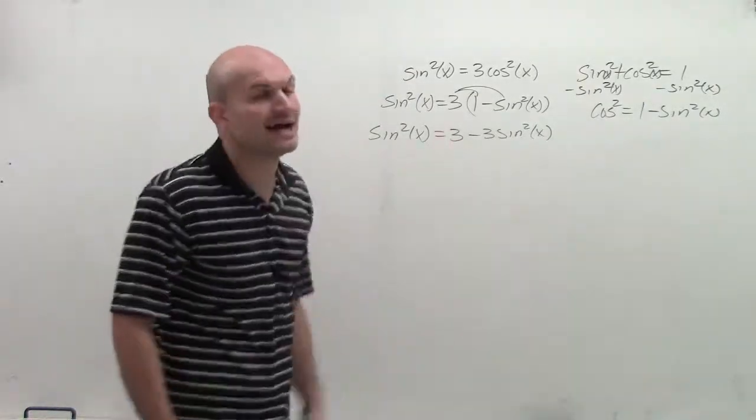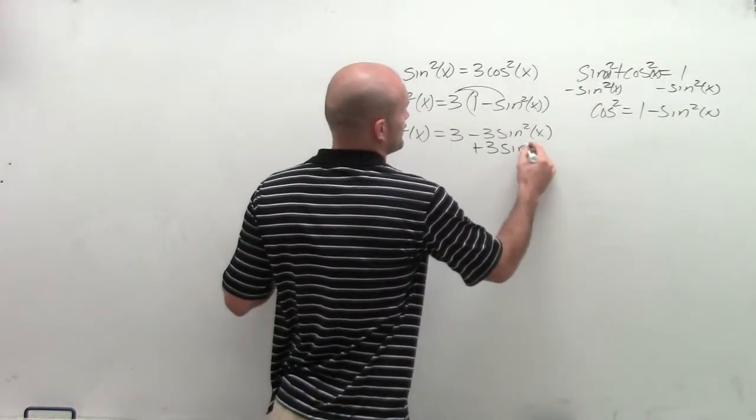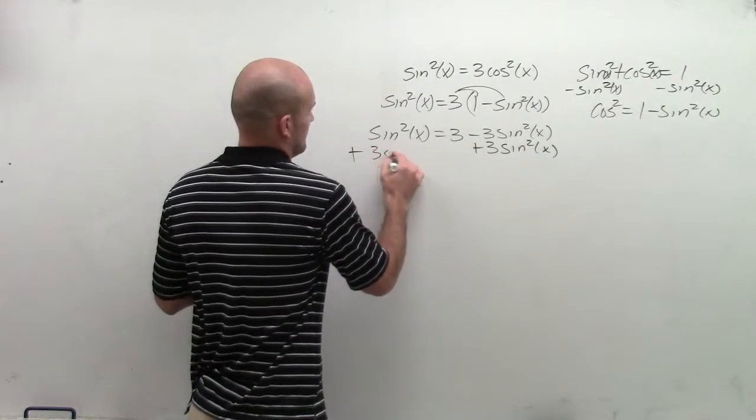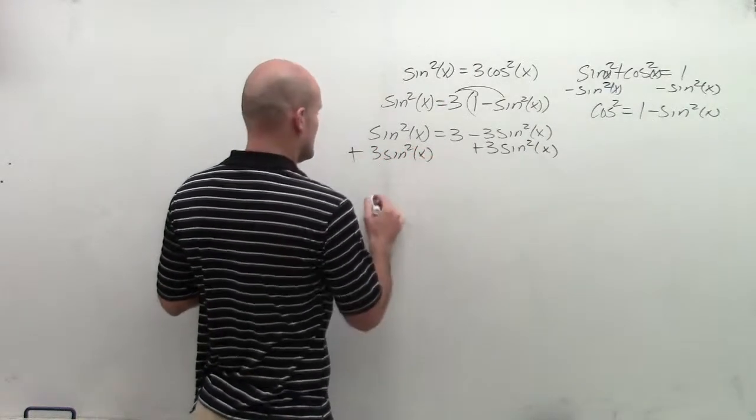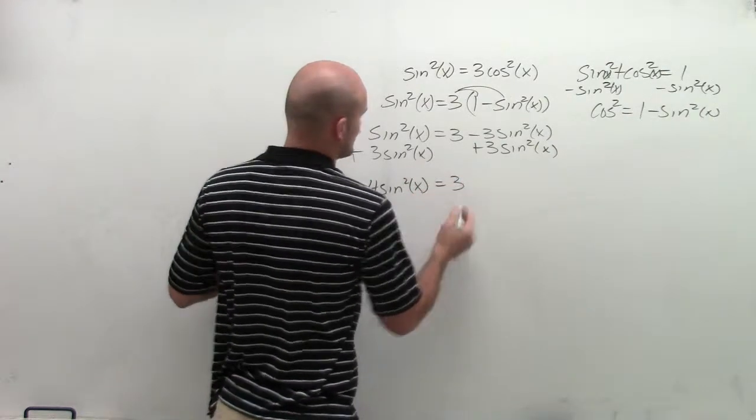So I need to get these sines on the same side. So what I'll do is I'll add 3 sine squared of x. And therefore, I have 4 sine squared of x equals 3.